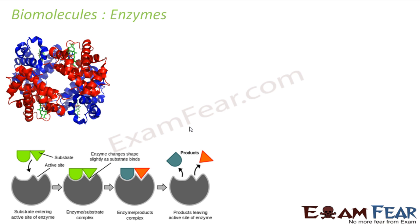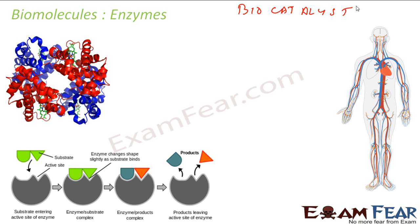Enzymes are biocatalysts. They are responsible for a large number of chemical reactions happening in the body to sustain our life. They are highly selective — for example, some enzymes are used to digest food, some are used to synthesize DNA. They have different shapes, and the shapes determine their function. Most enzymes are globular proteins.